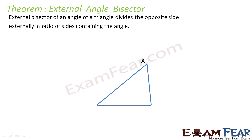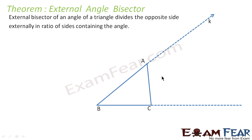This is triangle ABC. To draw the external bisector we extend the side, and somewhere here we will get the external angle bisector. Let this point be K. So we got this angle bisector, and this angle and this angle are equal — this is angle 1 and this is angle 2. So angle 1 is equal to angle 2.